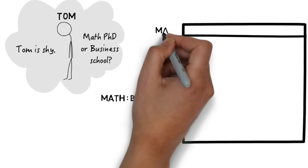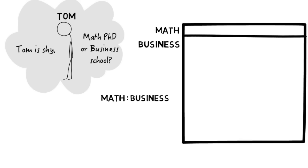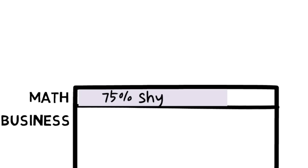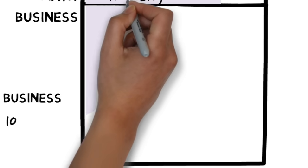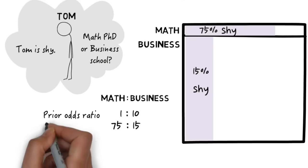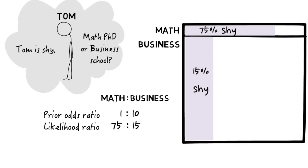You can imagine a divided rectangle representing the relative proportions of math to business students — roughly one to ten. Looking just at math students, about 75% come off as shy. Looking just at business school students, about 15% come off as shy. Now we've represented both pieces of information in one diagram. Since Tom is shy, he must be in one of the lavender rectangles representing shy math and shy business students. To get the relative probabilities, we compare the sizes of those lavender rectangles — and the lavender business rectangle is about twice as big as the lavender math rectangle.